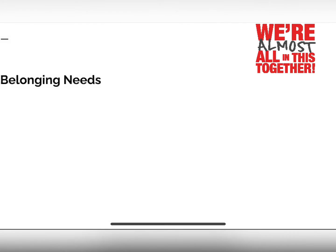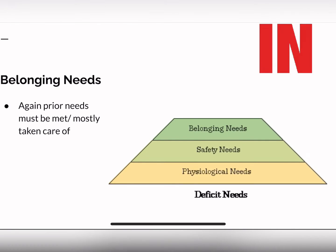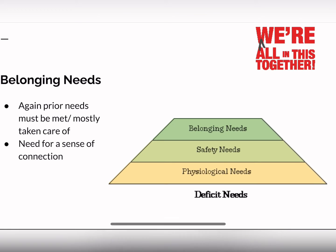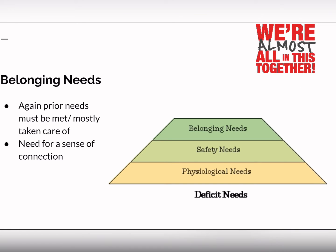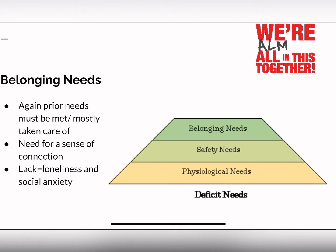Next up, we have belonging needs, which is our third level of the pyramid. Prior needs must be met or mostly taken care of — you can still address this level even if all your other needs aren't fully met. This is the need for a sense of connection: your relationships, friendships, significant others, and your need for a community. A lack of this can lead to loneliness and social anxiety.